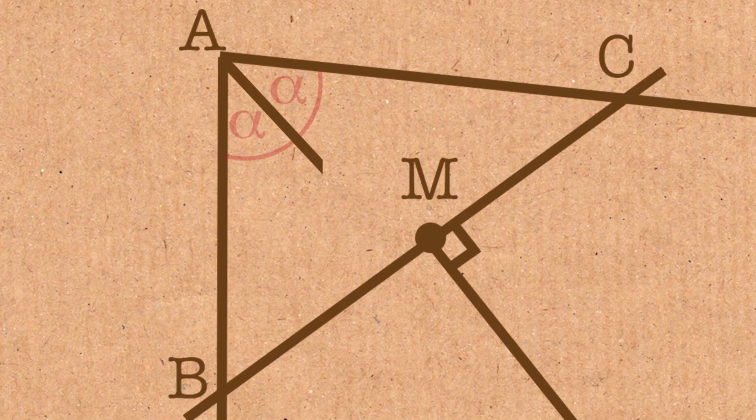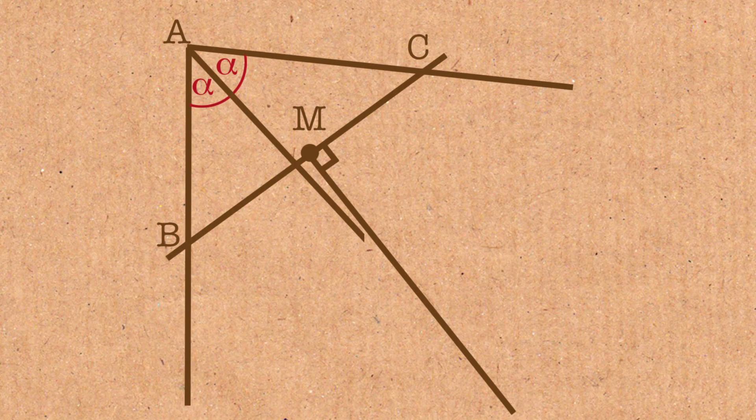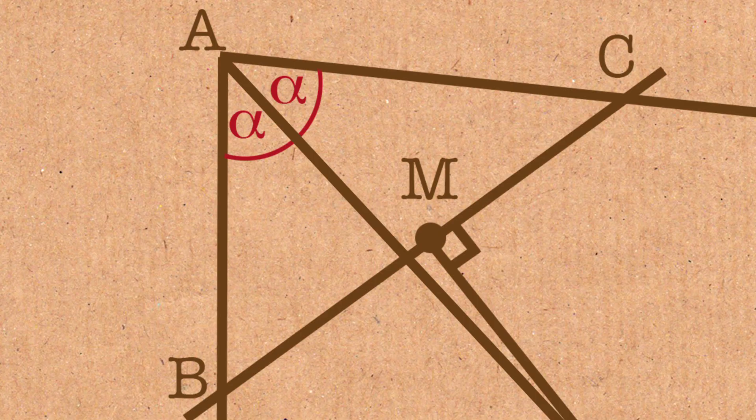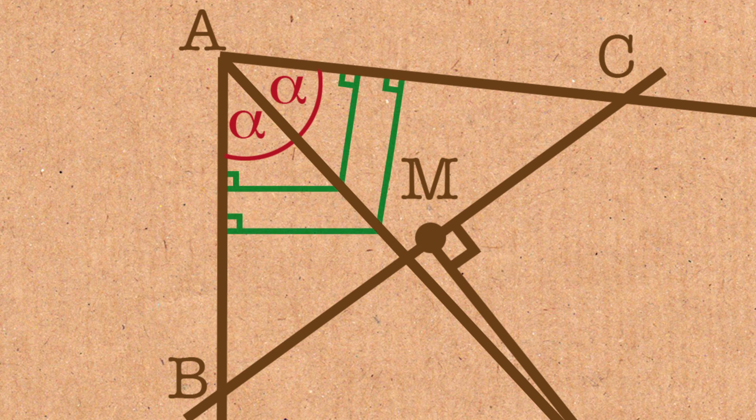So that should look something like that, I guess. And this line, of course, let's call it angle divider D, is the locus of all the points that are equidistant from lines AB and from line AC.